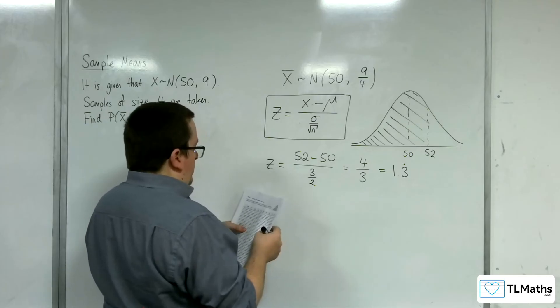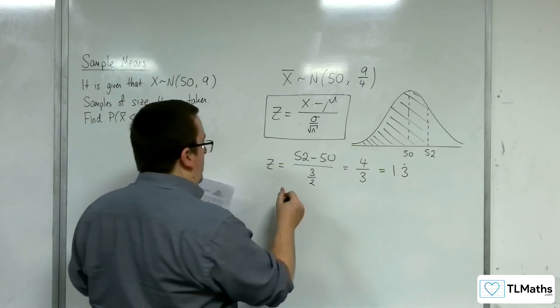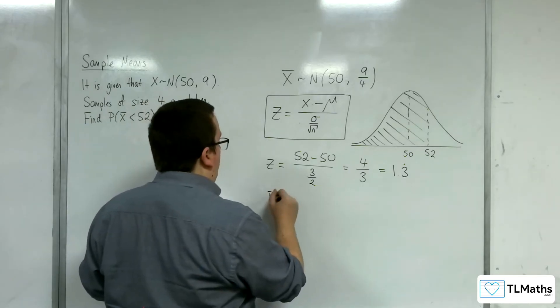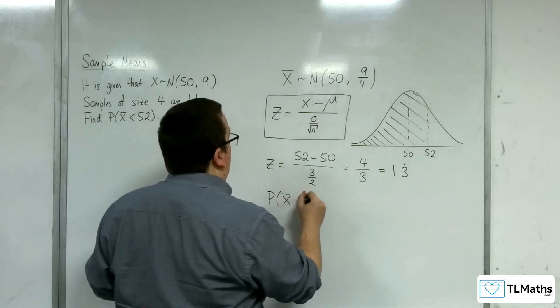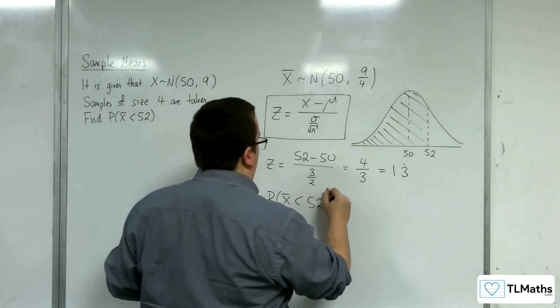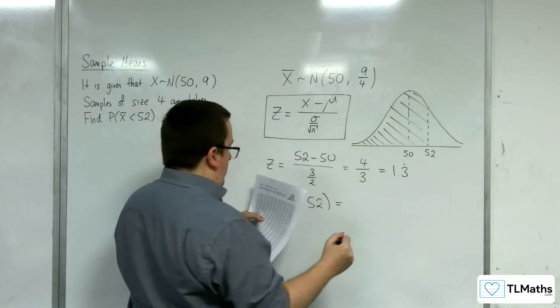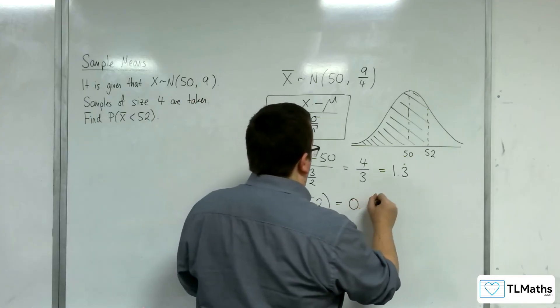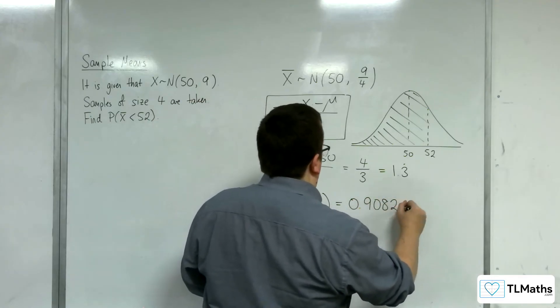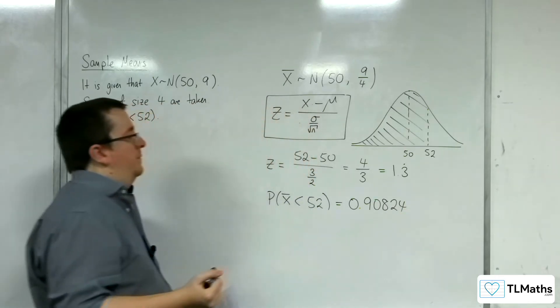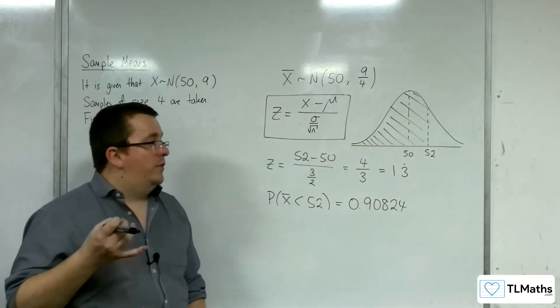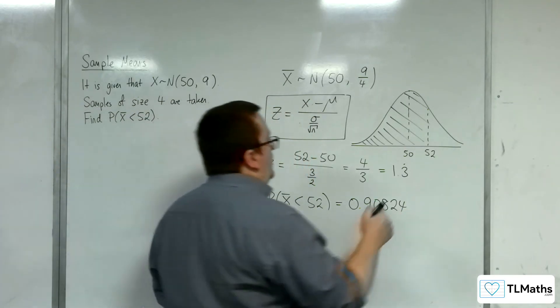So, the probability of x bar being less than 52 is going to be 0.90824. And that's me looking at 1.33 in the tables.